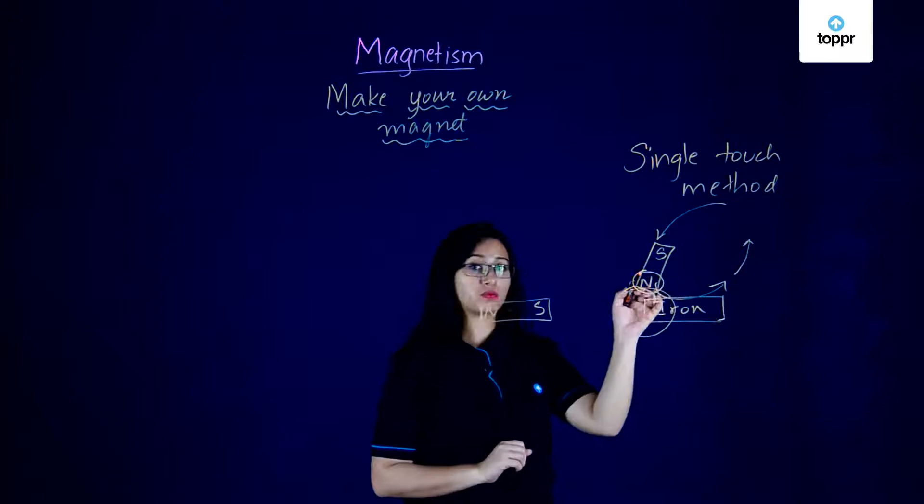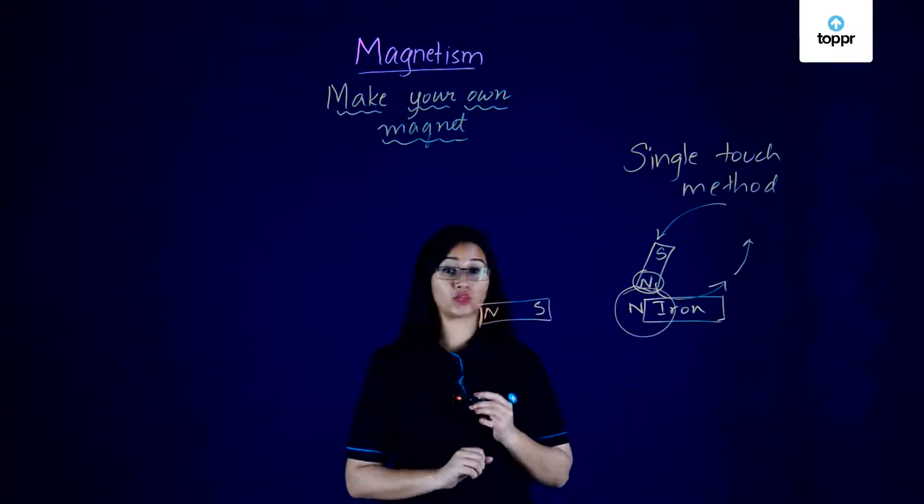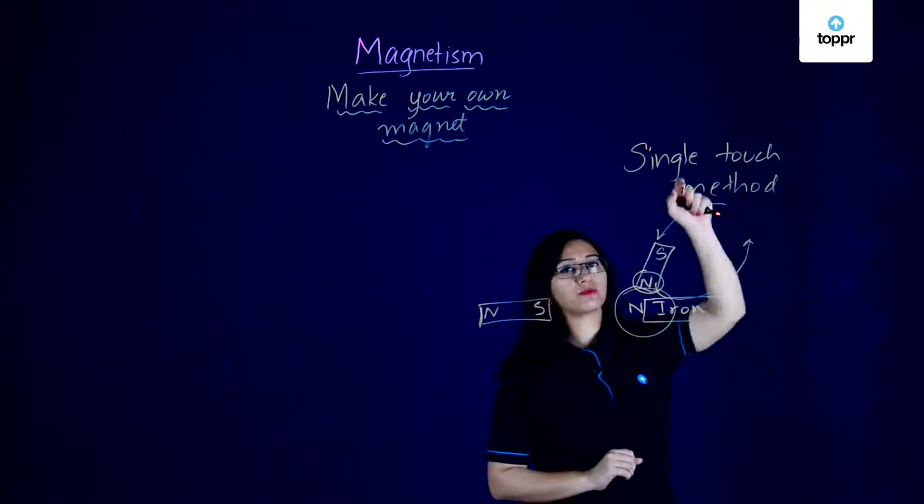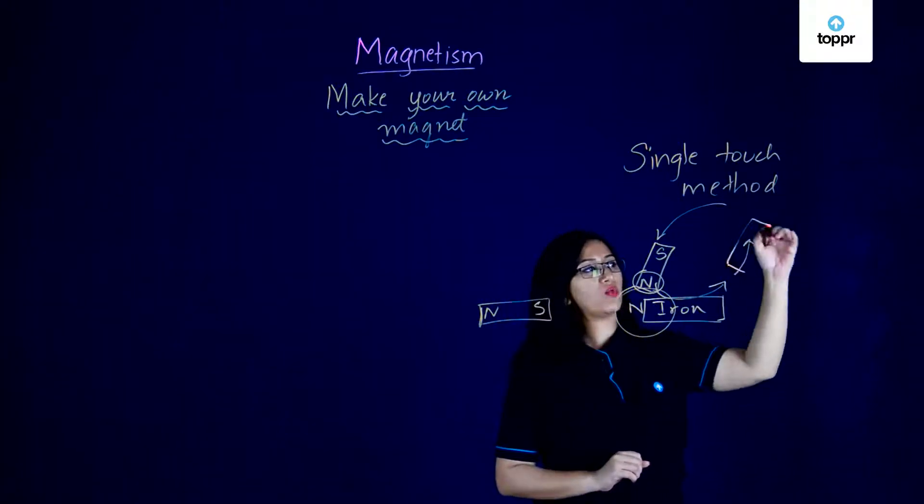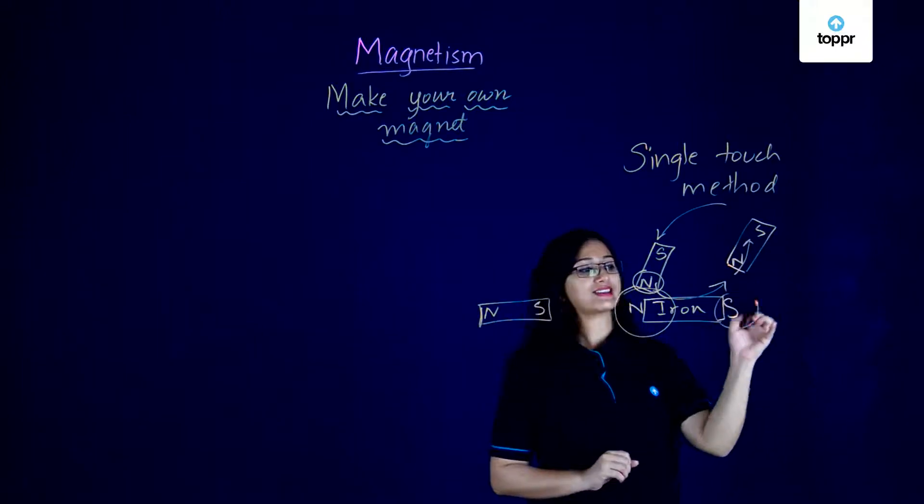And if you keep repeating this then what's going to happen is that the end over here that is closest to the north pole of the permanent magnet will slowly start to develop a north pole itself and the point which is moving away from the north pole as you're taking away the magnet will slowly start to develop a south pole.